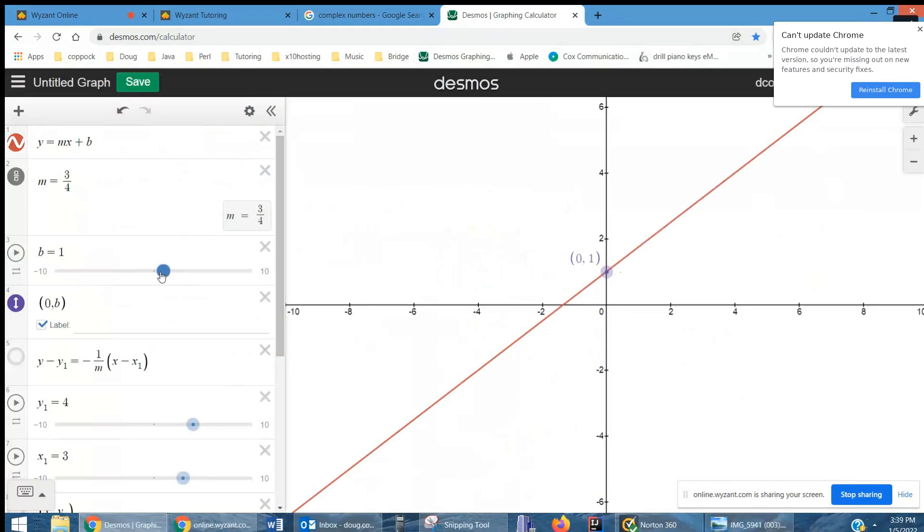And if I change the value of b, the y-intercept, see how that line moves? But the slope remains constant. So I'm going to leave that at 0, 1 right now.